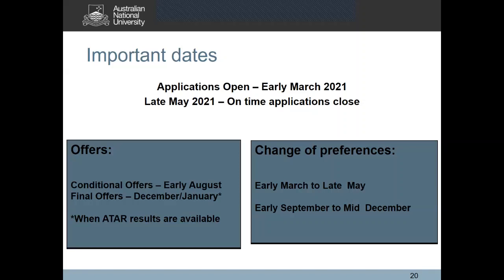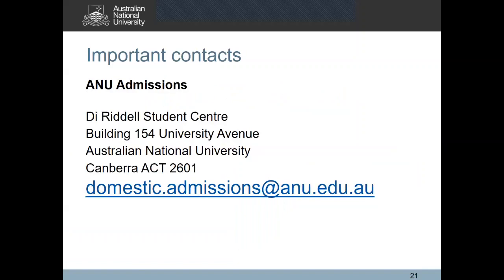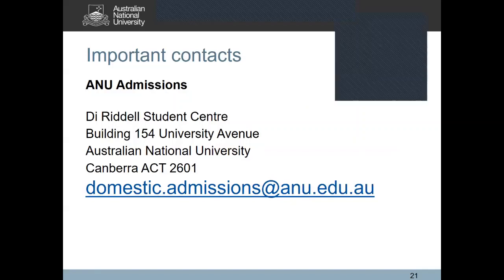The change of preferences window for the conditional offer stage will be between early March to late May, and for the final offer stage it will be between early September to mid December. Please note that all of these dates are to be confirmed, but the application timeline will be published on our website. Lastly, if you have any questions or any confusions, you're more than welcome to contact the ANU admissions team. Due to the situation surrounding the COVID-19 crisis, our team is working remotely, and therefore all inquiries need to be directed at the email address which is on this slide.